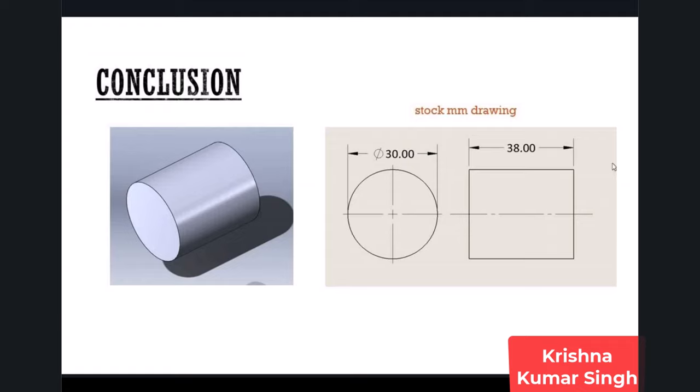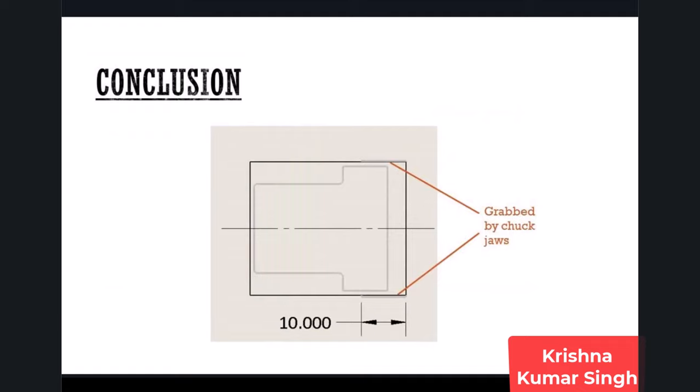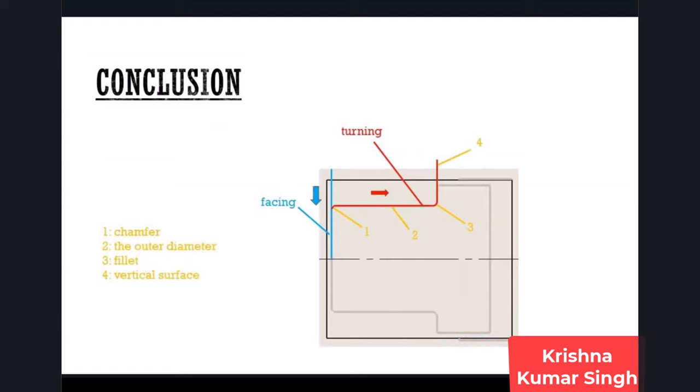This stock material is available on the market and you can buy it from any vendor. First, we will use a CNC lathe to machine some parts. You can see the stock and final part in the stock outline. We will fix the jaws with the stock material - 10 mm or 0.3937 inches. The lathe operation divides into two toolpaths: one facing and one turning. Facing makes the end flat.